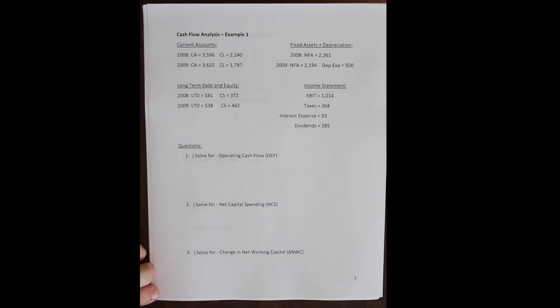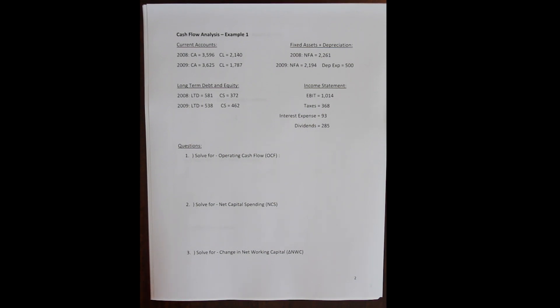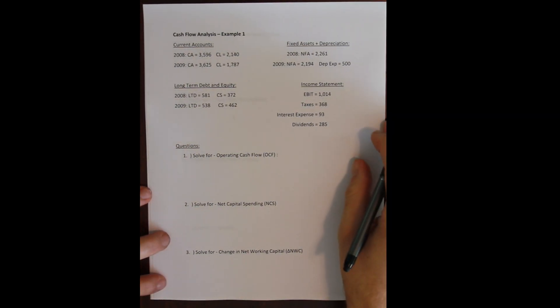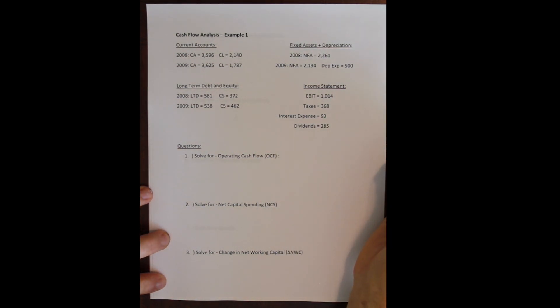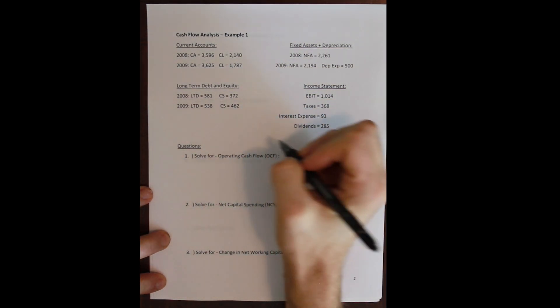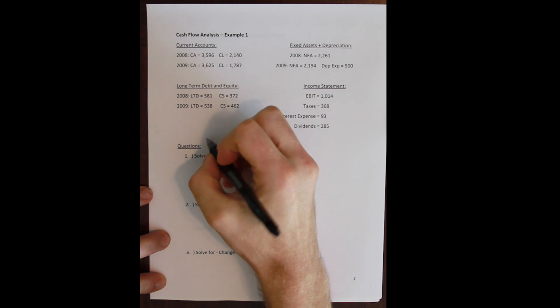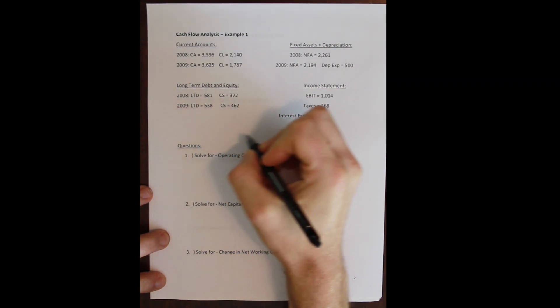Free cash flow, or cash flow from assets, is an identity. It requires that the money coming into the firm from outside sources is the same as the money being spent or generated in the firm, and vice versa — any money being generated in the firm has to be going out to outside sources.